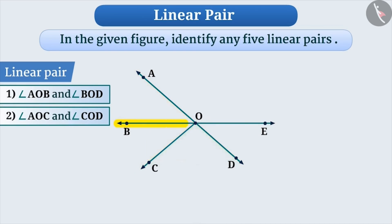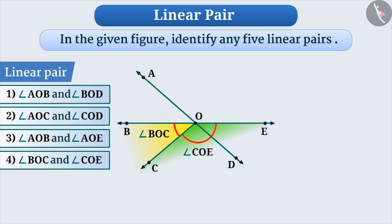If we talk about line BE with the ray OA on it, linear pair angle AOB and angle AOE is formed. Similarly, linear pair angle BOC and angle COE is formed with ray OC on BE.